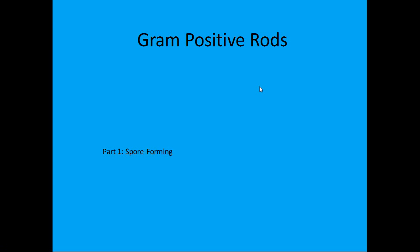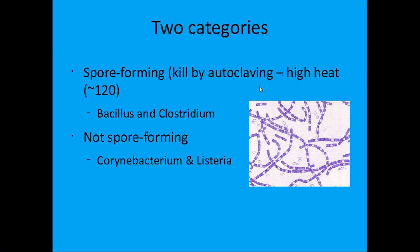Now we're going to go through gram-positive rods. This is not too high yield, so we'll go through it fast. The two categories are those that form spores and those that don't. Spore-forming bacteria are very resistant to heat and chemicals — a spore is a non-metabolically active shield that protects the bacteria — but you can kill them by autoclaving at 120 degrees Celsius. Non-spore-forming bacteria are not resistant to heat and chemicals. The spore-forming genera are Bacillus and Clostridium; the non-spore-forming are Corynebacterium and Listeria.